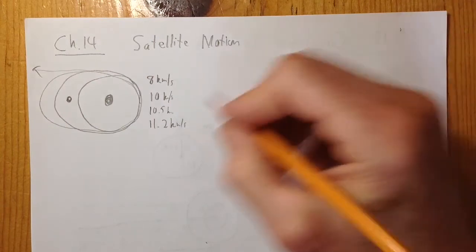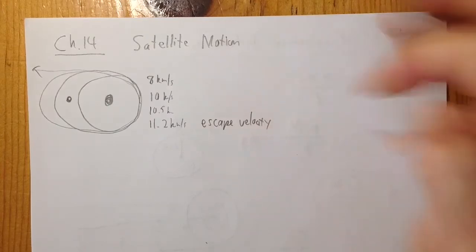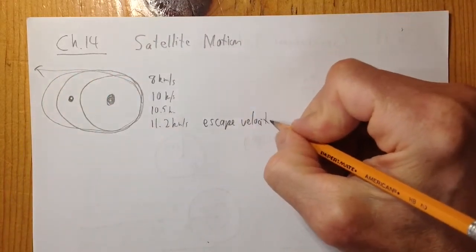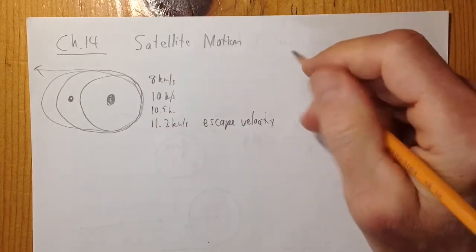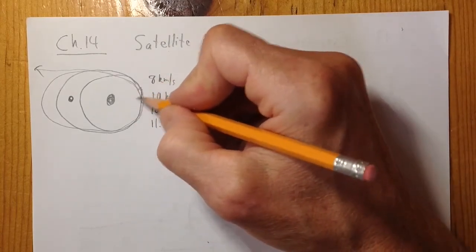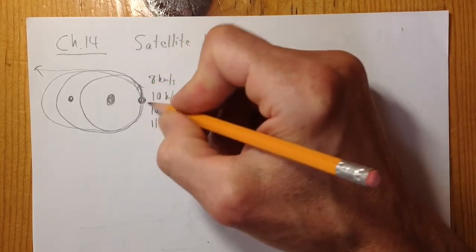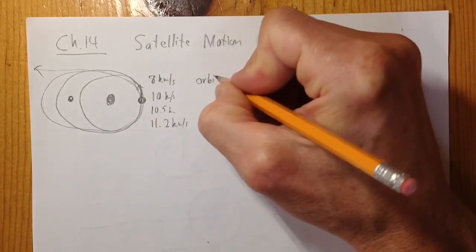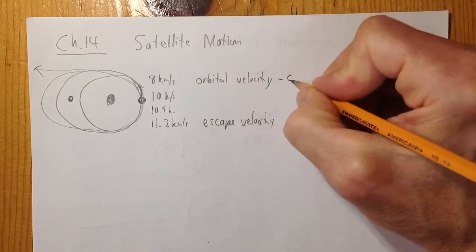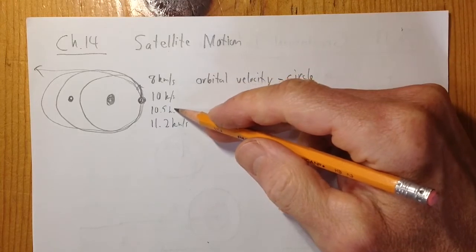Finally, if we go 11.2 kilometers per second, we're going fast enough around the sun that we actually escape it — we go off, don't come back, and we're gone. That's called the escape velocity. So there are two basic velocities in this chapter that are interesting: the escape velocity, how fast you have to throw something so it's gone forever and gravity can't hold it back; and the orbital velocity, how fast you've got to throw it sideways. You've got to throw it at right angles to the direction toward the sun. The orbital velocity is the slowest orbital velocity, and that's for a circle.